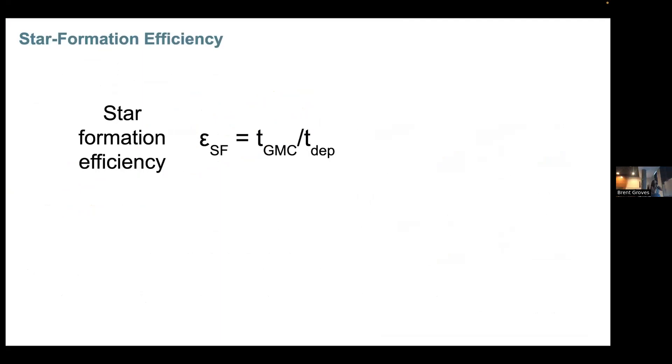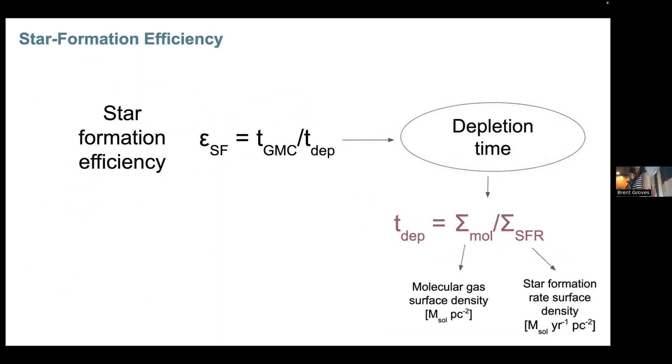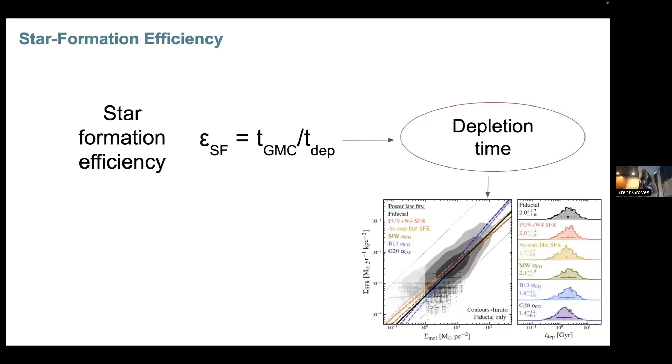Okay, so in case you had stopped paying attention, let's go back to the first equation. Now we have the depletion time and we got this from our star formation rate surface density and molecular gas density surface density maps. From this we were able to plot the Kennicutt-Schmidt relation. Now we need the molecular cloud lifetime. Theoretically you could use the free fall time, but we used something else.